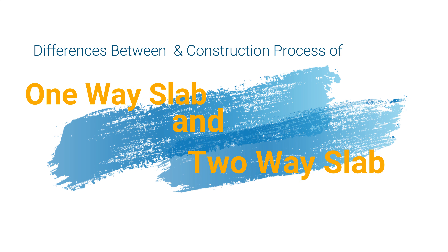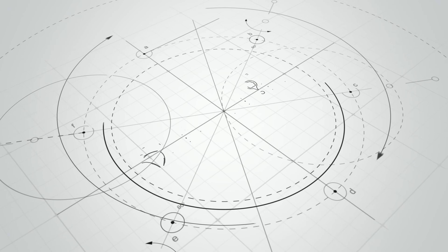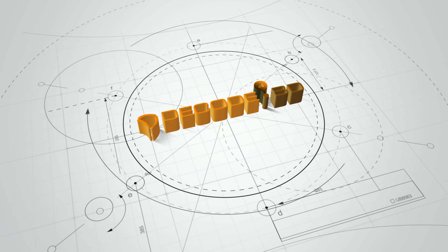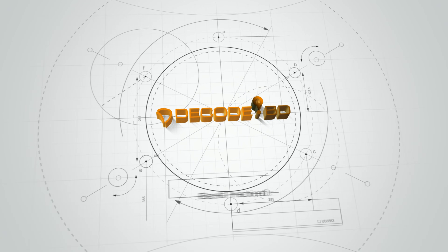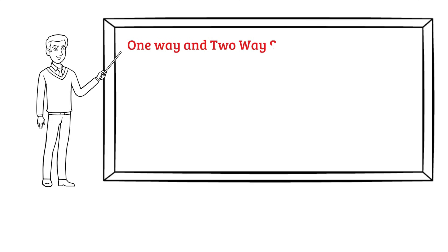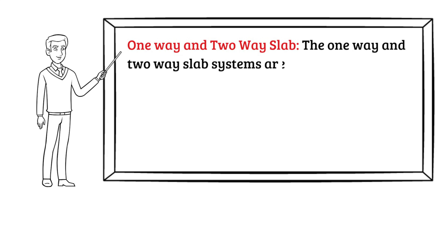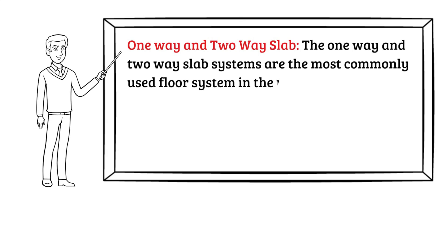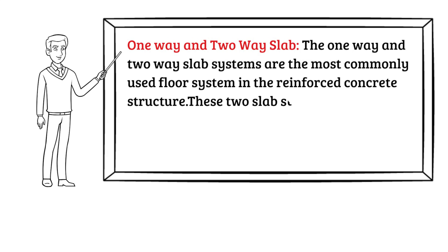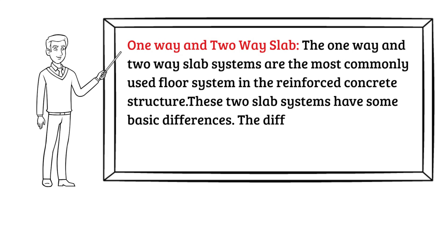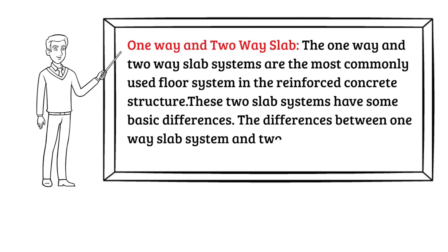Bismillahirrahmanirrahim. Dear viewers, today we will discuss about the differences between one-way and two-way slab, and also the construction process of one-way and two-way slab. The one-way and two-way slab systems are the most commonly used floor systems in reinforced concrete structures. These two slab systems have some basic differences.